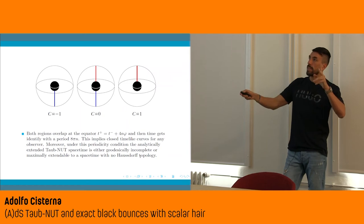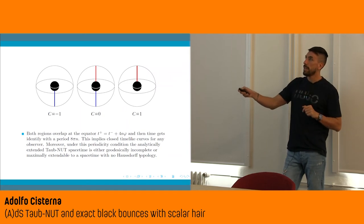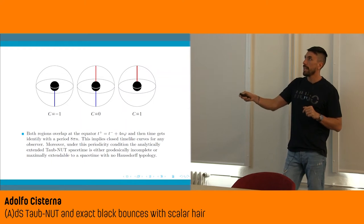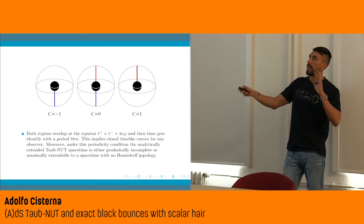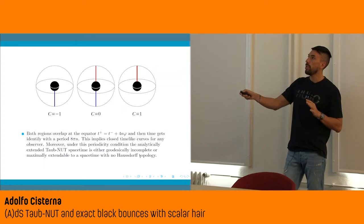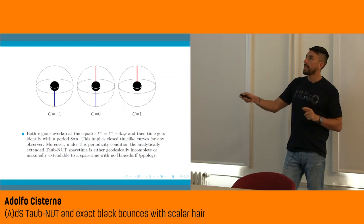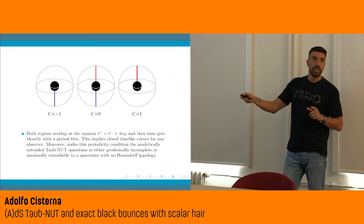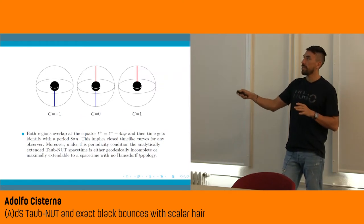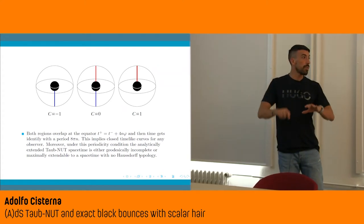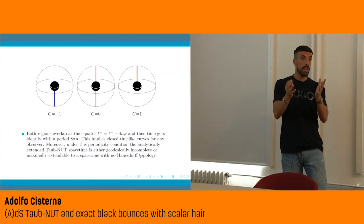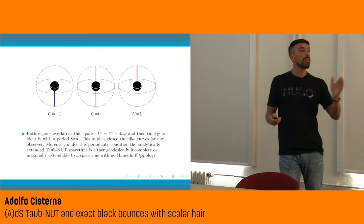The idea before was to do one coordinate transformation so that this full pathological axis is divided in two — either having a pathology in the north axis or in the south one — but because of the Misner string, we would have access only to the hemisphere which is free of pathologies. Now we are not going to do that. We are going to have half of the axis with this pathology and have access to the full chart, not dividing the θ coordinate into two charts.